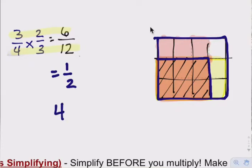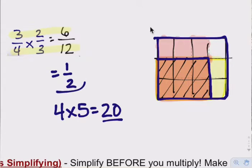When you take any whole numbers and multiply them together, their product is always larger than either of the two factors. So one thing about multiplying a fraction times a fraction is that your product should be smaller than either of the two factors, because you're taking part of a part. It makes sense that it would be smaller.